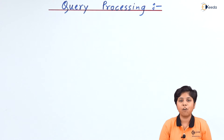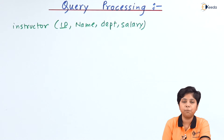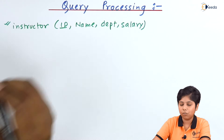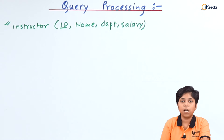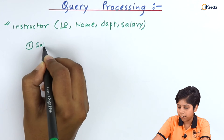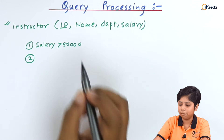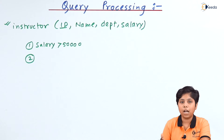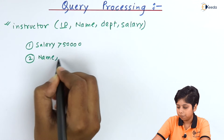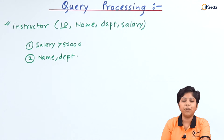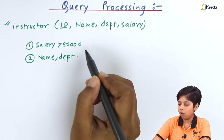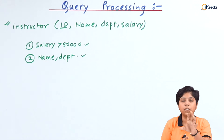To build a query, consider for instance we have an instructor relation in a relational database. I want to retrieve all instructors that have a salary greater than 50,000. My conditions are: one, salary greater than 50,000, and two, I want all the details — all attribute names. Or I could mention only particular attributes like name and department of each instructor.